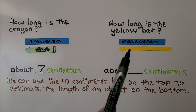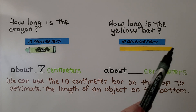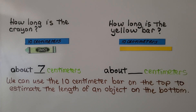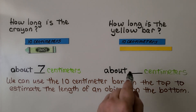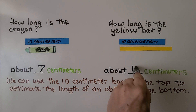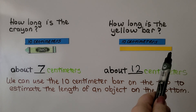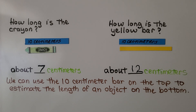How long is this yellow bar? The blue bar is 10 centimeters — about how long is that yellow bar? If you said about 12, you're right. It's about 2 centimeters longer than that blue bar, so 12 would be a very reasonable estimate.